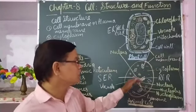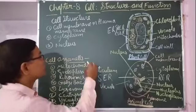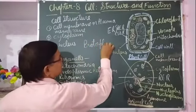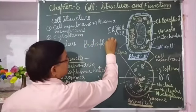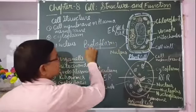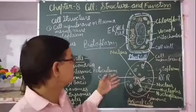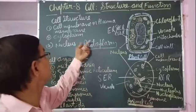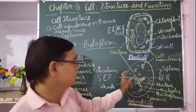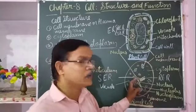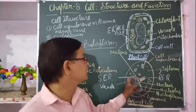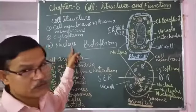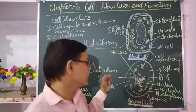Cytoplasm plus nucleus is called protoplasm. So there should not be confusion between protoplasm and cytoplasm. Cytoplasm is only the content between the cell membrane and the nucleus, and protoplasm is cytoplasm plus nucleus — that is called protoplasm.